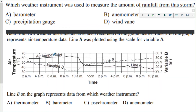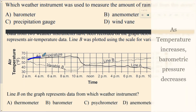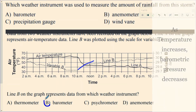Looking at a graph with temperature on one axis and variable B — one measured in degrees Fahrenheit and one in inches — which instrument does line B represent? The clue is that it's measured in inches, and as temperature goes up, this variable goes down, and vice versa. They're opposites — an indirect relationship. That would be air pressure, barometric pressure — the barometer.